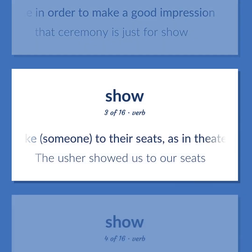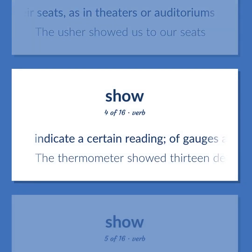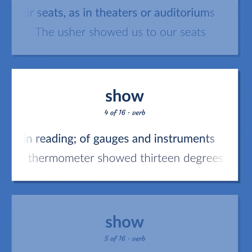Take someone to their seats, as in theaters or auditoriums. The usher showed us to our seats. Indicate a certain reading, of gauges and instruments. The thermometer showed 13 degrees below zero.